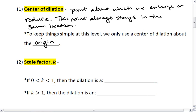The other part of dilations is the scale factor. And scale factor is the factor by which we enlarge or reduce. Usually we give it a variable of K.